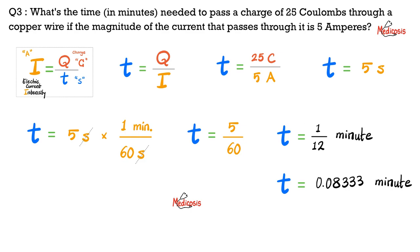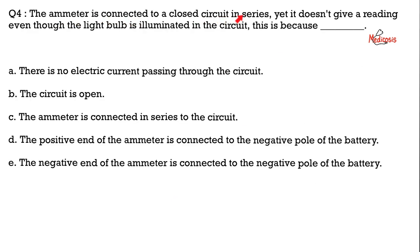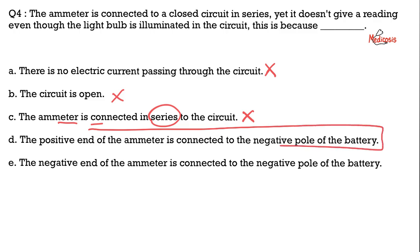Here's the same answer in more color — pause and review. Next question: the ammeter is connected to a closed circuit in series yet does not give a reading, even though the light bulb is illuminated. What is the cause? Choice A — no electric current passing — is incorrect because the bulb is illuminated. The circuit being open is incorrect for the same reason. The ammeter connected in series is how it's supposed to be. The correct answer is D: the positive end of the ammeter is connected to the negative pole of the battery — we must connect positive with positive and negative with negative.